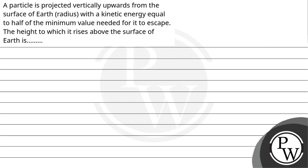Hello Bacho, let's read the question. A particle is projected vertically upward from the surface of earth with a kinetic energy equal to half of the minimum value needed for it to escape. The height to which it rises above the surface of earth is?